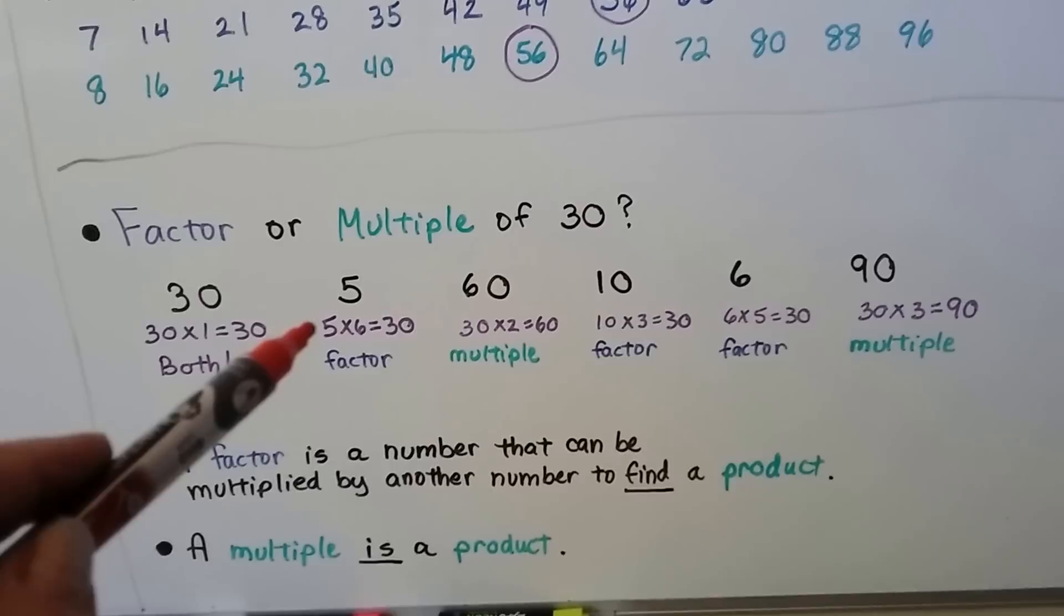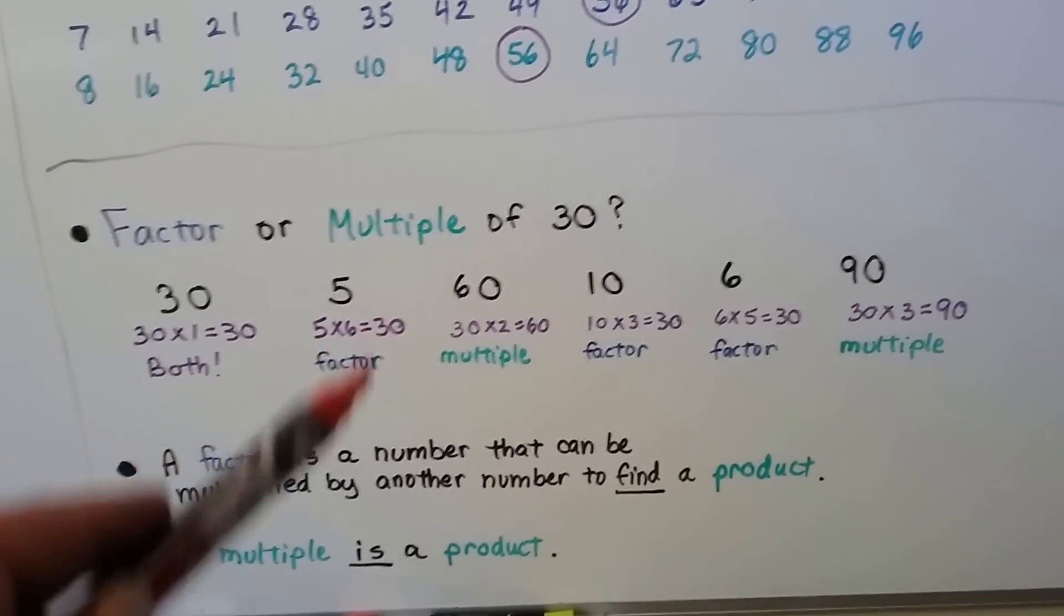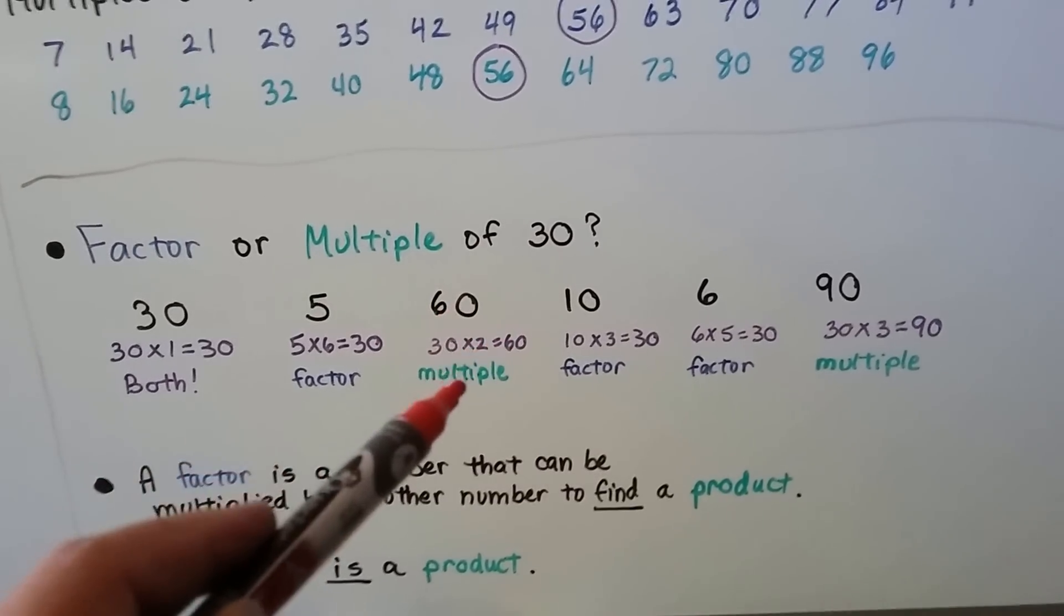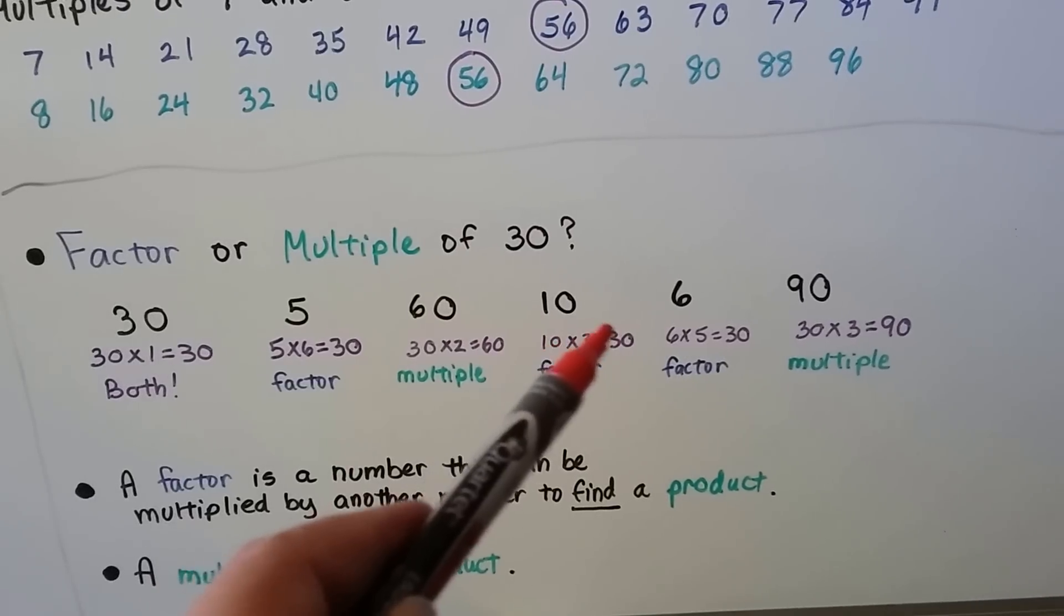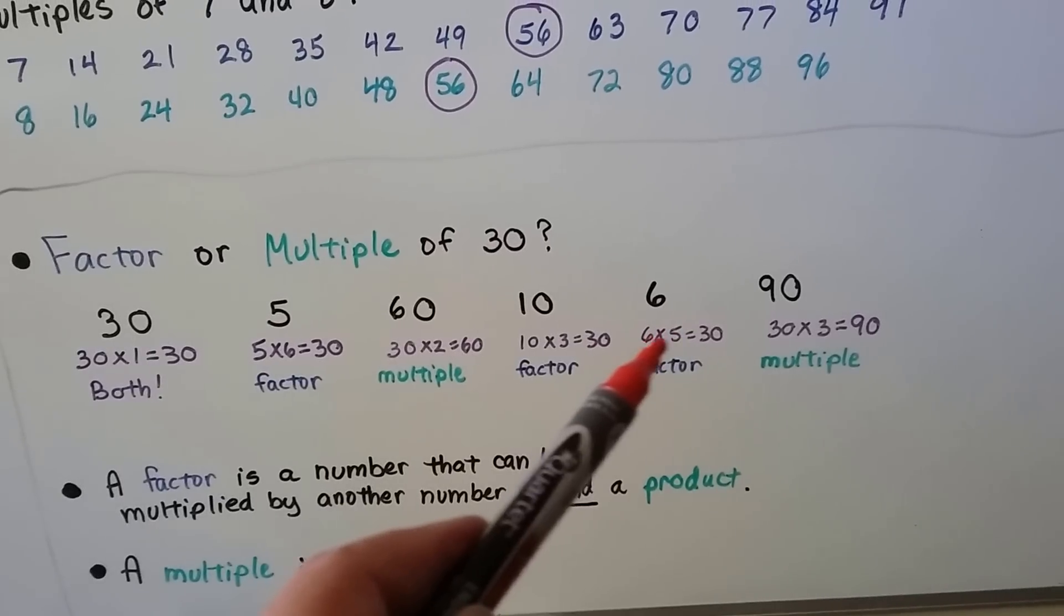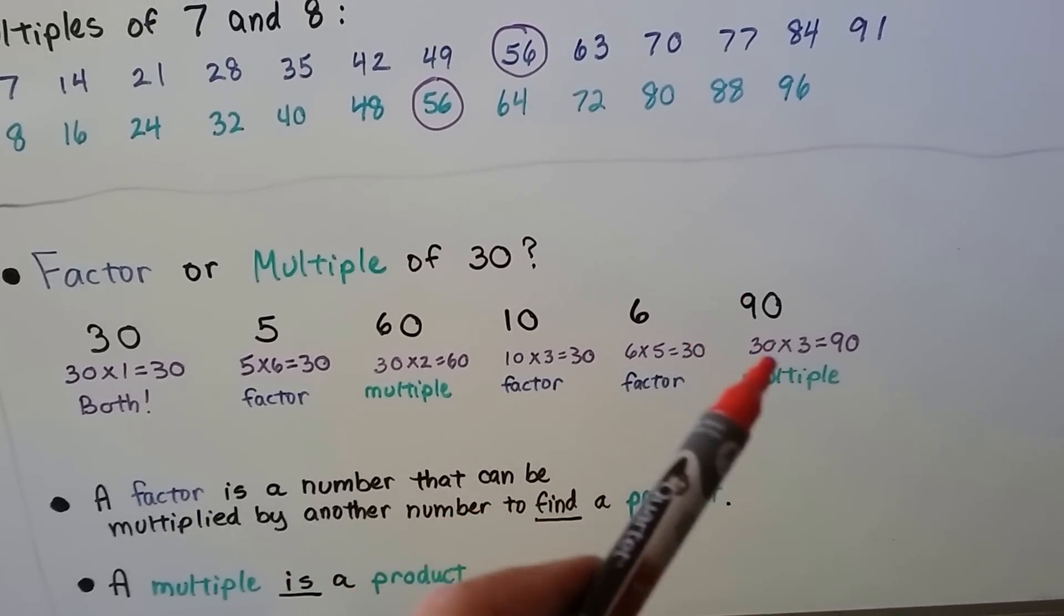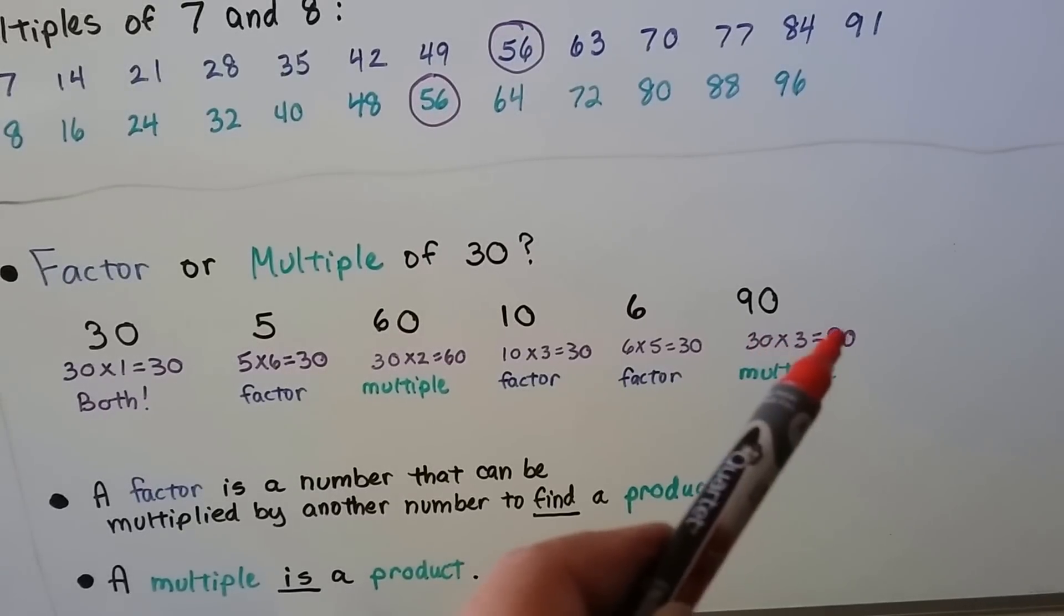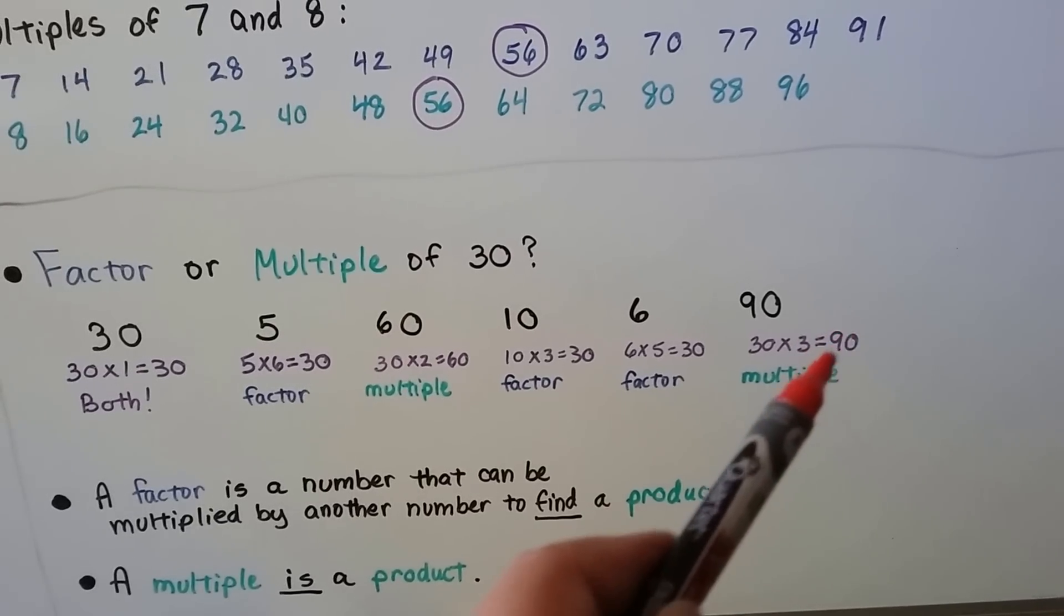5, well, 5 times 6 is 30, so that's a factor. It's a number we multiply together to get 30. 60, that's the answer, so that's a multiple. 10, it's a number we multiply together to get to 30, so that's a factor. 6, that's a number we multiply together with another number to get 30, so that's a factor. And 90, we have to multiply something to get 90, 30 times a counting number. So it's a multiple. It's an answer.